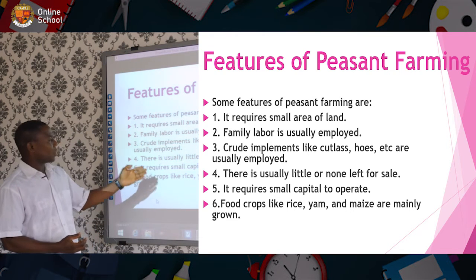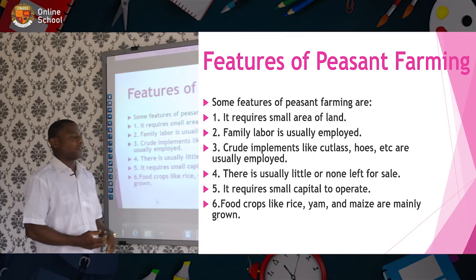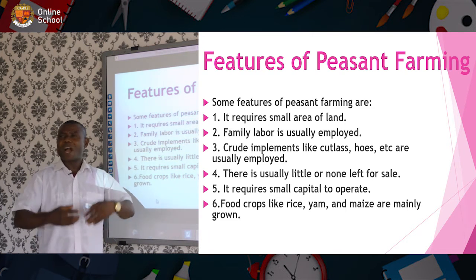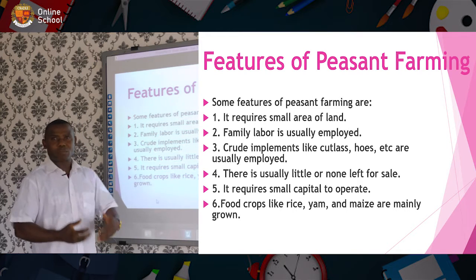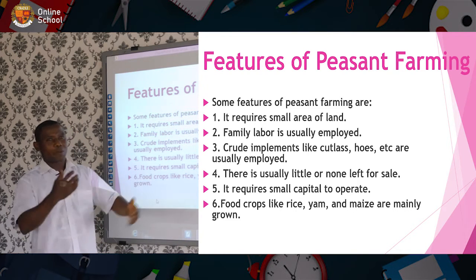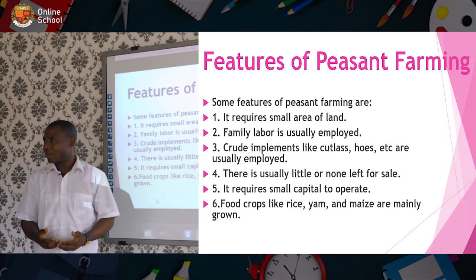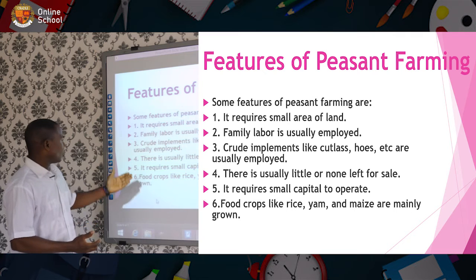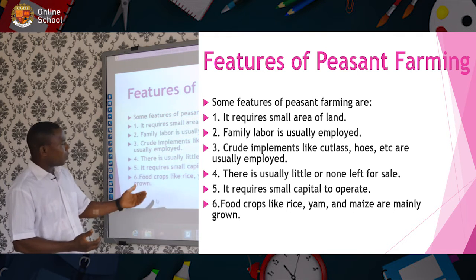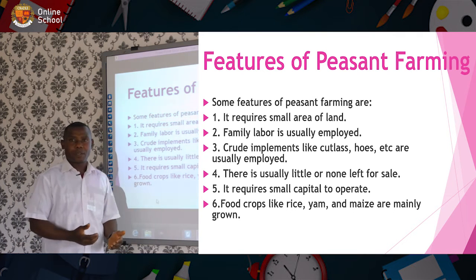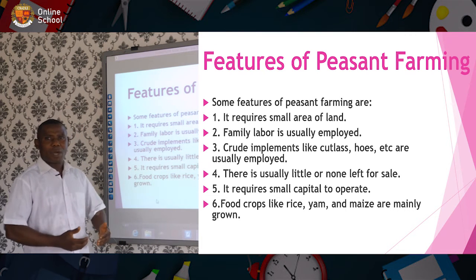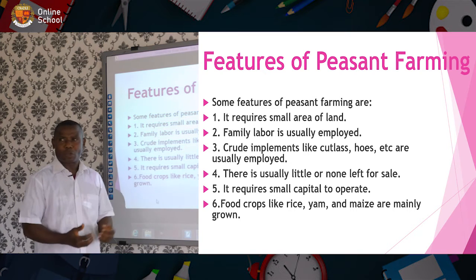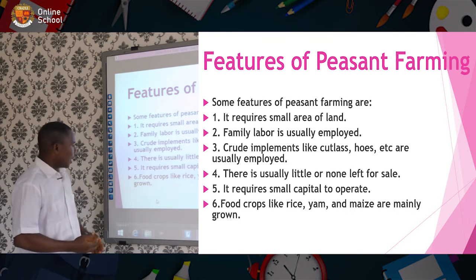Number four, there is usually little or none left for sale. The peasant farmers don't have much to sell because what they are producing is not even enough for them sometimes, talk less of going out to sell some of the products. Number five, it requires small capital to operate. You can use any little amount and start the farming work. You don't need a huge amount of money before you can carry out the work.